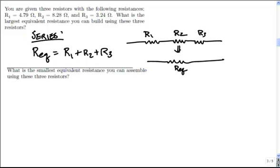The next question says, what is the smallest equivalent resistance that you can assemble? So we learned that when things are in parallel, it always decreases their overall resistance.